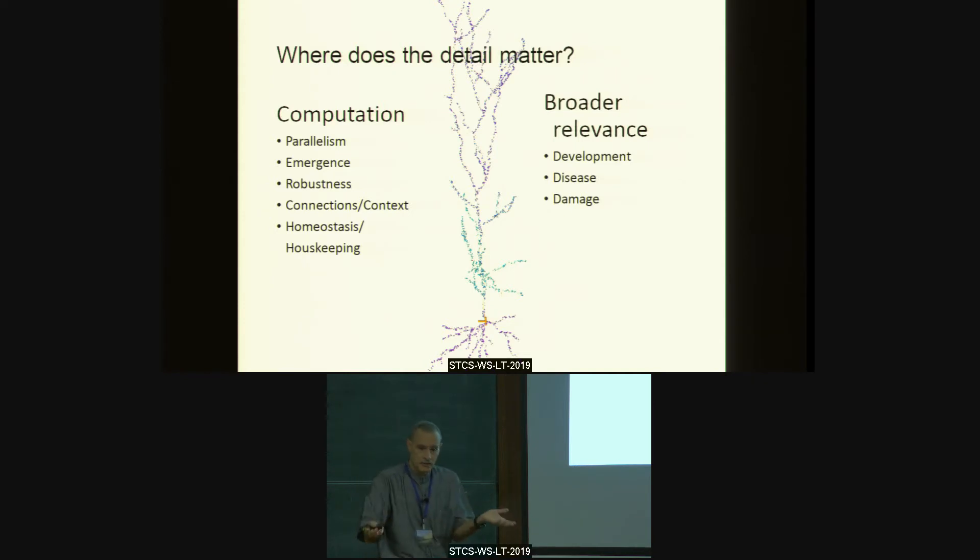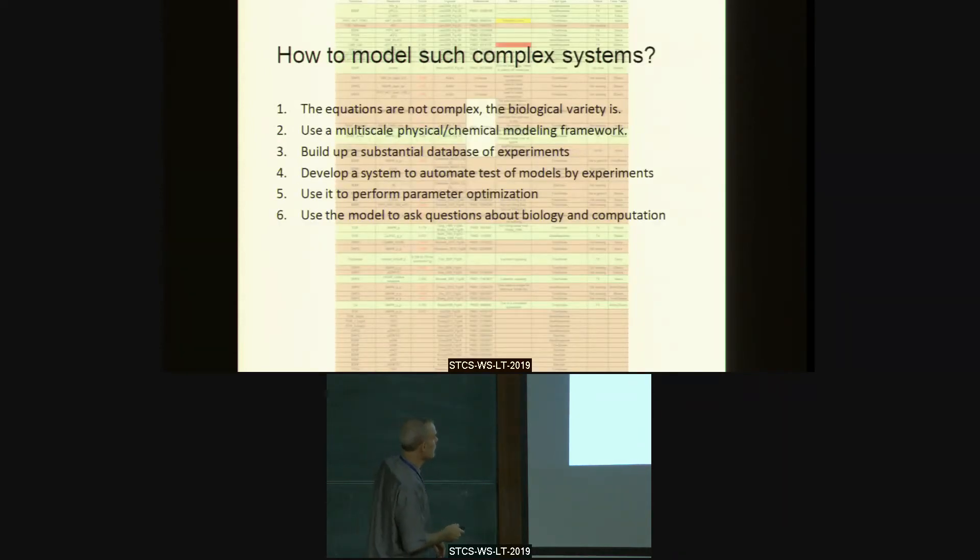But if you want to talk about value to society or other kinds of things, well, there's development. How does your brain even get to the connections, the structure it has? That is the outcome of thousands of decisions of chemical nature. Disease and damage are all things that require you to be thinking about the detailed chemistry. So, after that plug for it, let me explain how we go about it. And this, in a nutshell, is what we do.